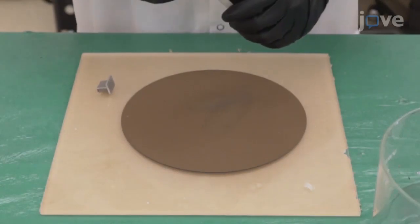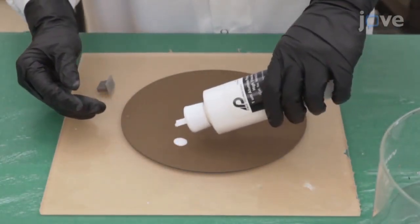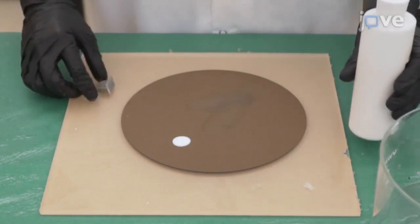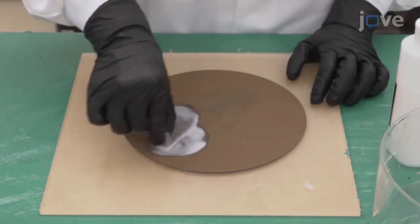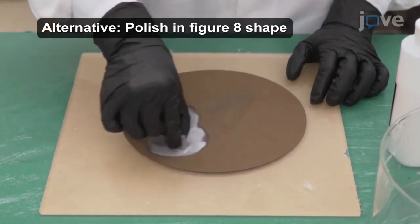After the last grinding, pour one ounce of a one micrometer alumina suspension onto a clean microfiber cloth pad and polish the sample in one direction until the scratch lines have been removed.